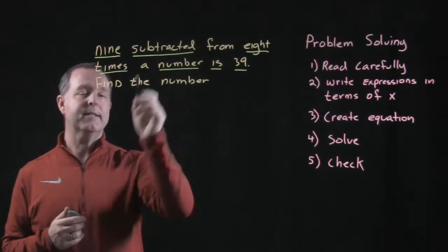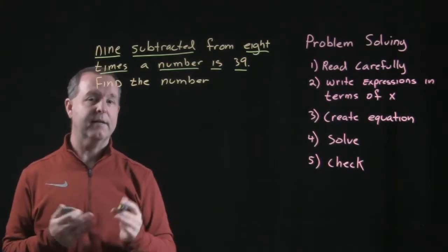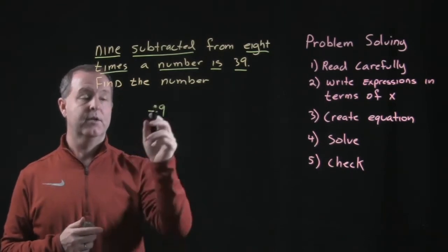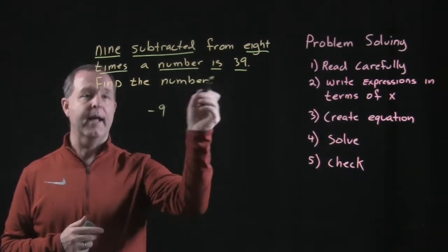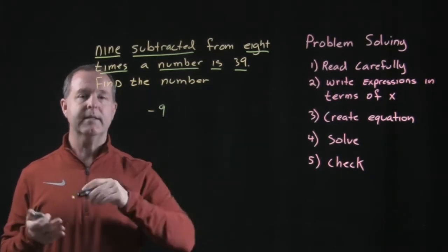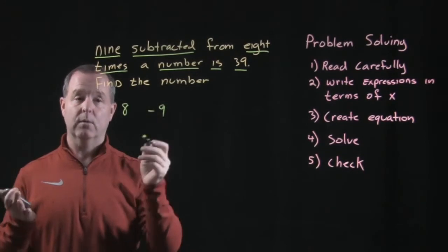So I see I have 9 subtracted from something. 9 subtracted from. So I'm going to have a takeaway 9. Subtracted from what? 8 times a number. Times means multiplication. 8 times a number. So it could be 8 times what we don't know, which was that number, which we already assigned as our unknown.